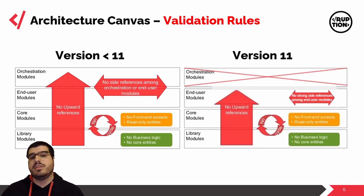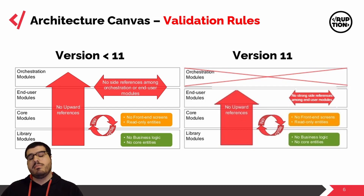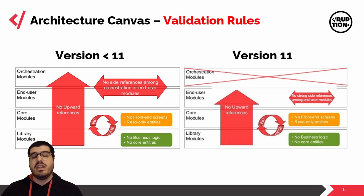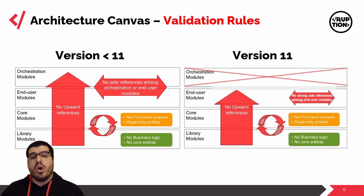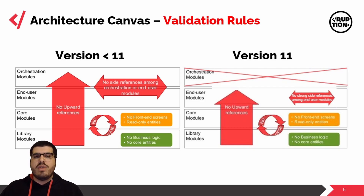On this slide you have two versions of the set of validation rules — one for versions prior to version 11 and another for version 11. For versions prior to version 11: we cannot have any upward references, meaning foundation layer modules cannot reference any modules above them. We should not have any cyclic references, and there should not be any side references between end user modules. For the core layer, you should never have front-end servers on them, and your entities should always be read-only. If you need to expose write operations, you should always build your own CRUD operations. For library modules, you should have no business logic and no core entities. In version 11, most of the same principles apply, except that since screen references are now considered weak references, you just cannot have any strong references between end user modules.